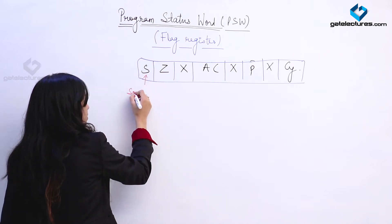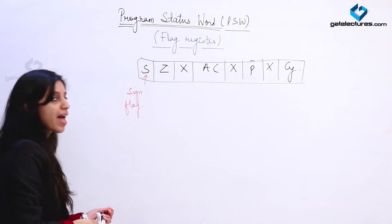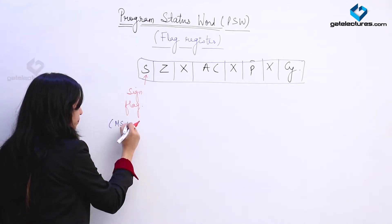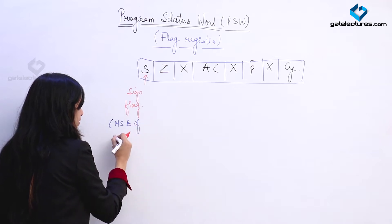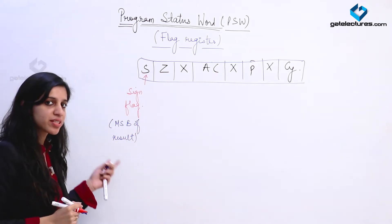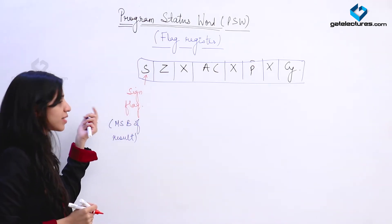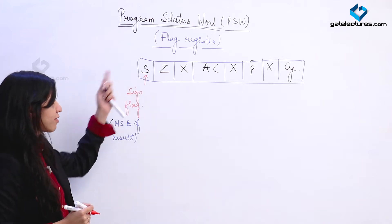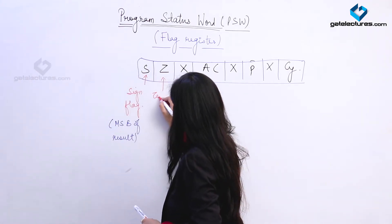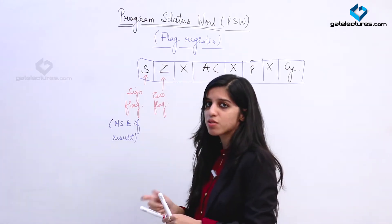The sign flag holds the MSB of the result. If the MSB is 1, that means it is a negative number, so the sign flag is going to be 1. If it is a positive number, that is MSB is 0, then the sign flag is going to be 0. The zero flag is 1 if the result is zero.